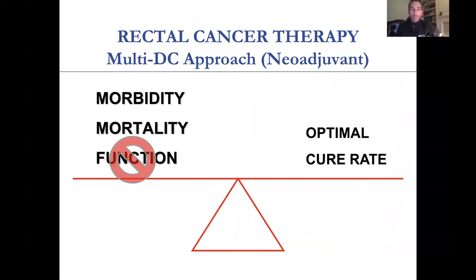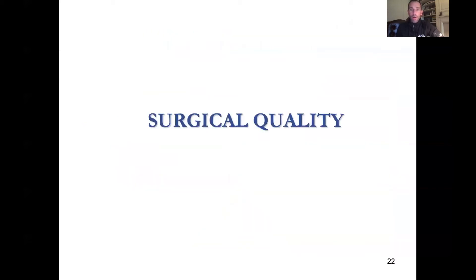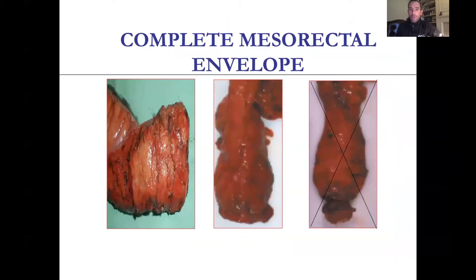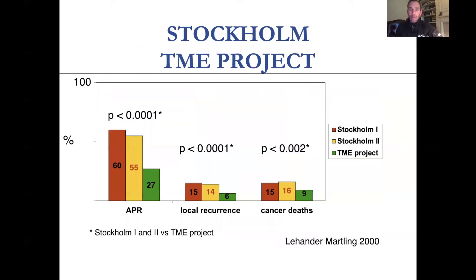Looking overall at rectal cancer and the multidisciplinary approach for neoadjuvant therapy, function is something we need to think about, with no change in overall morbidity and mortality. What about cure rate? We have to talk about surgical quality. When the goal is to do a formal low anterior resection, how good is the mesorectal envelope? A complete mesorectal envelope versus an incomplete or near-complete one has significantly different outcomes.